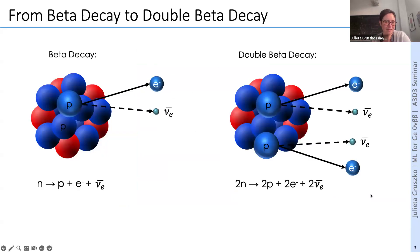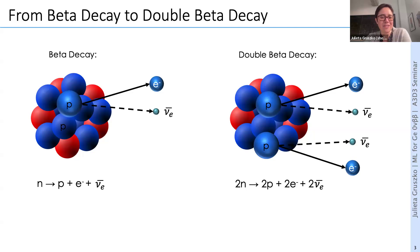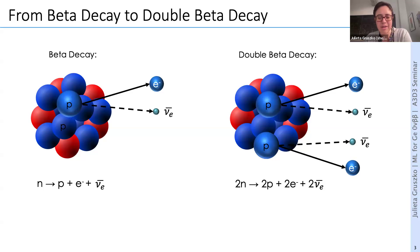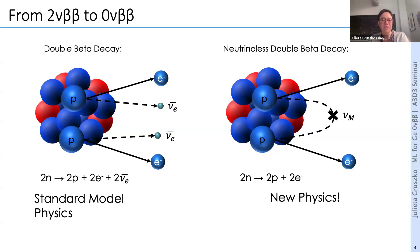I'll tell you a little bit about what we're looking for, which is neutrino-less double-beta decay. Some of you are familiar with beta decay — this is how the neutrino was discovered. A neutron turns into a proton plus electron and emits an antineutrino. Double-beta decay has two neutrons turning into two protons, emitting two electrons and two antineutrinos. This is a standard model process with a very long half-life occurring in a certain subset of nuclear isotopes.